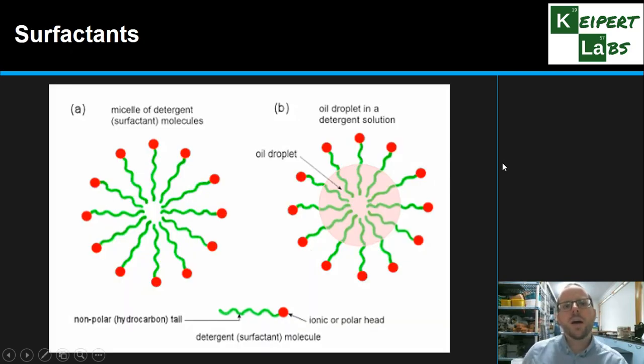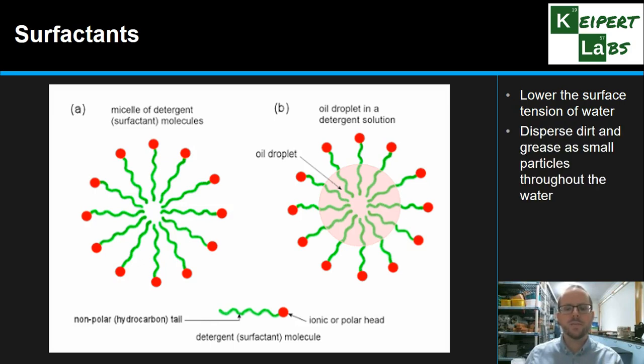Soaps and detergents are molecules we describe as surfactants. A surfactant is a molecule that can lower the surface tension of water, stop it from beating up together into a sphere as much. But especially in this context, what we focus on is the fact that surfactants can be used to disperse dirt and grease throughout a sample of water, because it bundles them up into really small particles that can be dissolved.